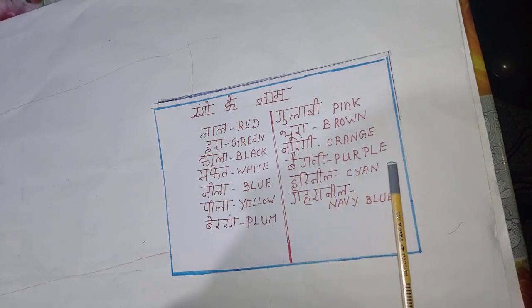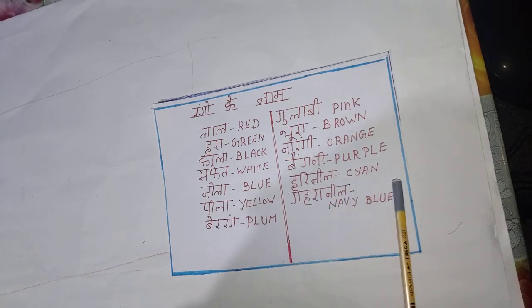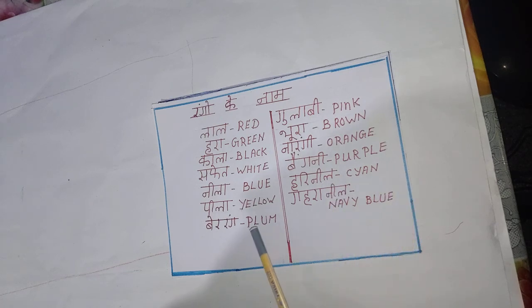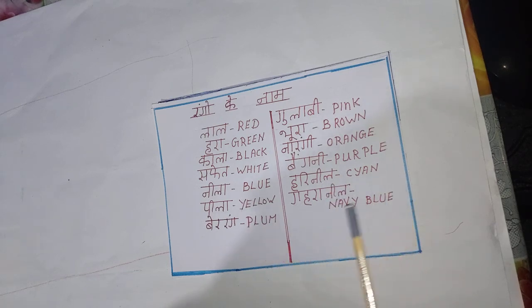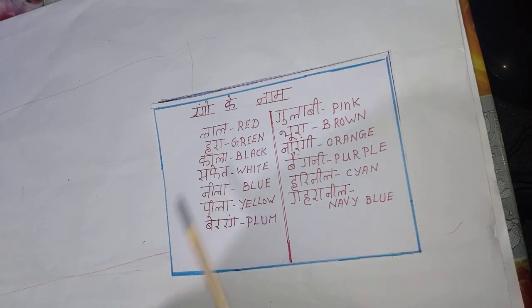Narengi, orange. Baingani, purple. Hari nil — shian. Gahra nil — navy blue.